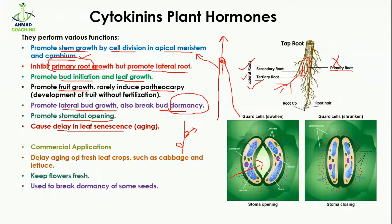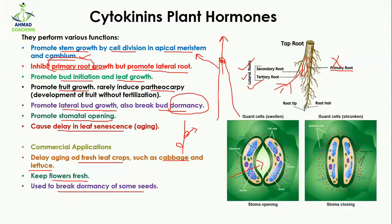There are some commercial applications of cytokinin. It delays the aging of fresh leaf crops such as cabbage and lettuce — spraying cytokinin on these vegetables keeps their leaves fresh for a longer period. It is also used to keep flowers fresh and to break the dormancy of some seeds, allowing them to grow into plants.